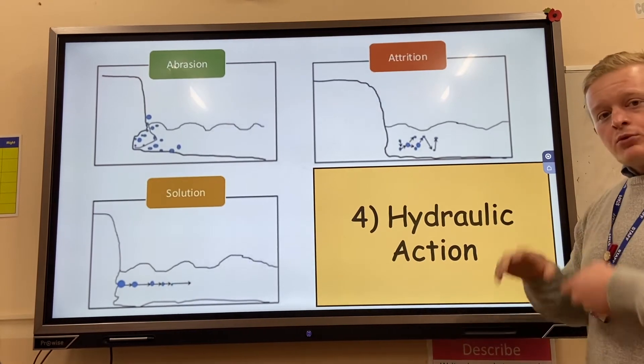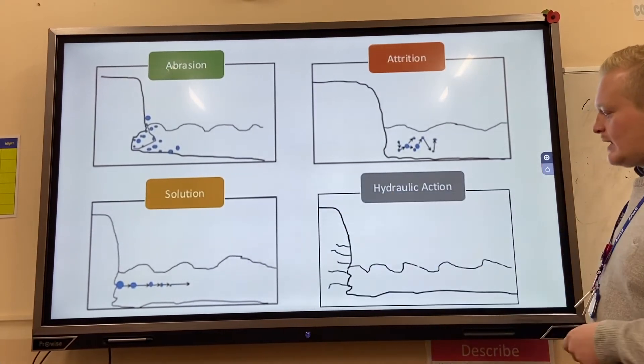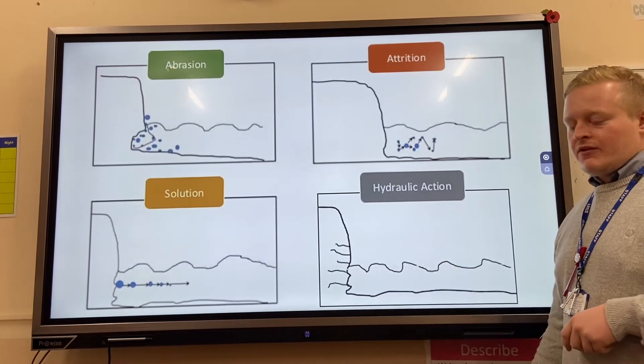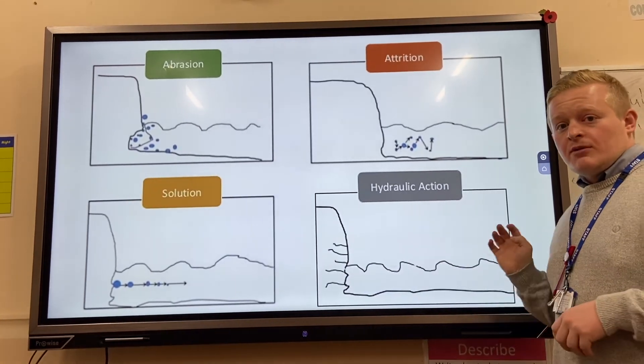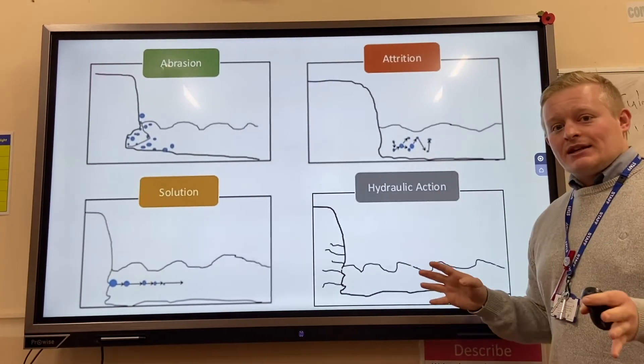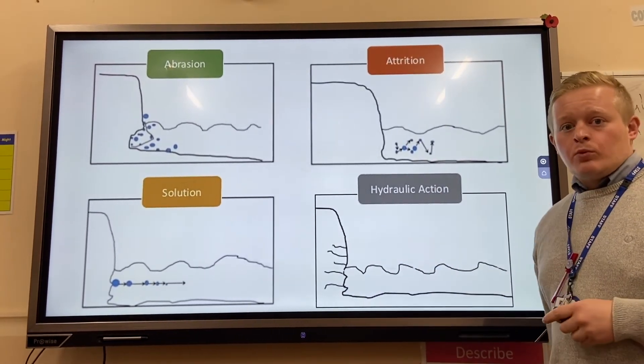They get made more smooth, they get made more rounded. Last one, hydraulic action: the water itself gets forced into all of these cracks at the base of the cliff. We have something called cavitation. The pressure is really high. When the wave comes out, those cracks get expanded and made larger and break down and fall away from the cliff.